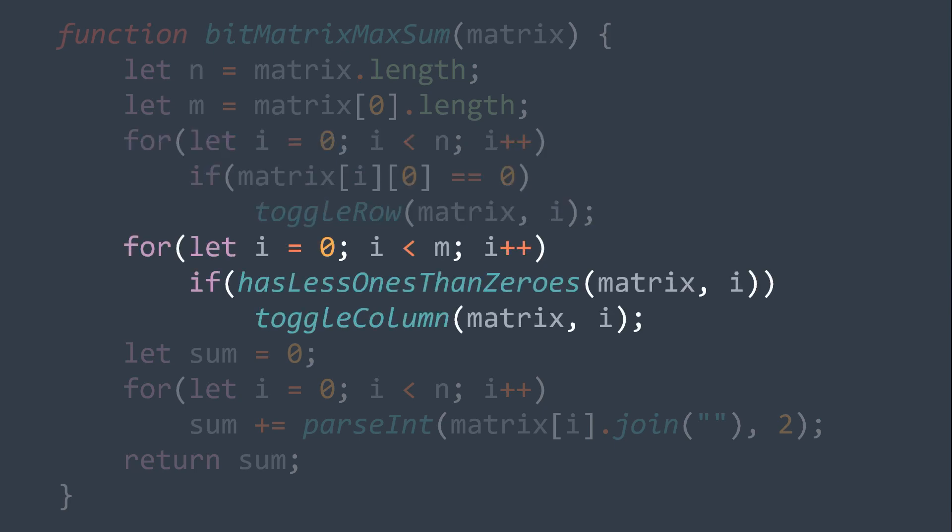Second step, toggle the columns. For each column at the index i, we check if it has less ones than zeros, by using the function we made, and if it's the case, we toggle it, by using the function we made.